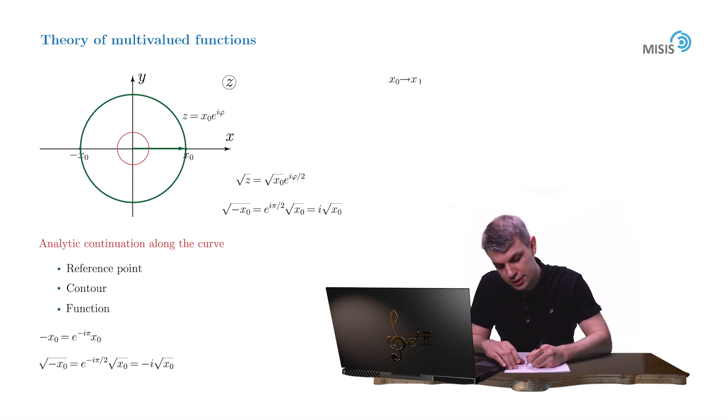we change to x₀ times e^(2πi), arriving at the same point. But the square root will now flip its sign. It will become square root of x₀ times e^(πi).